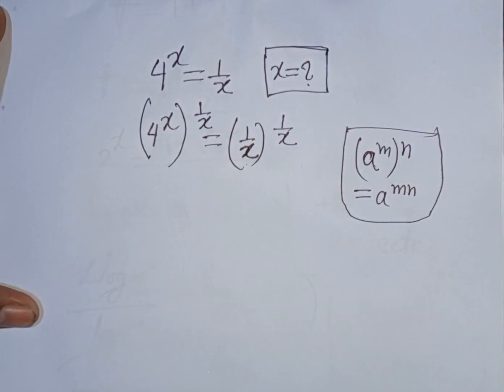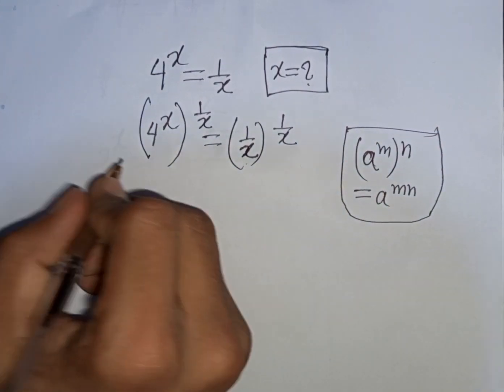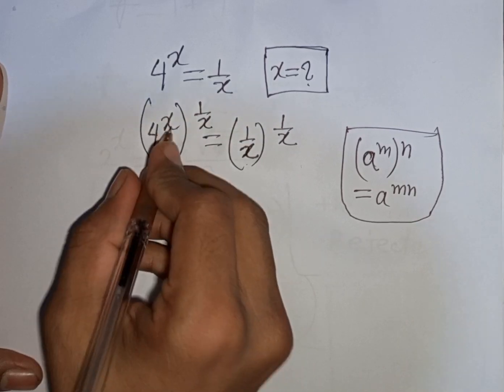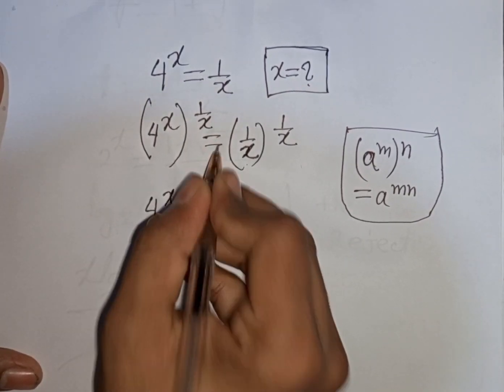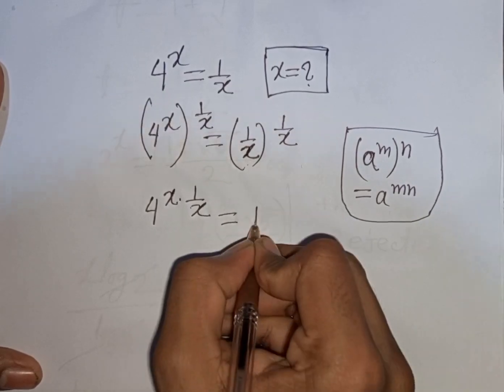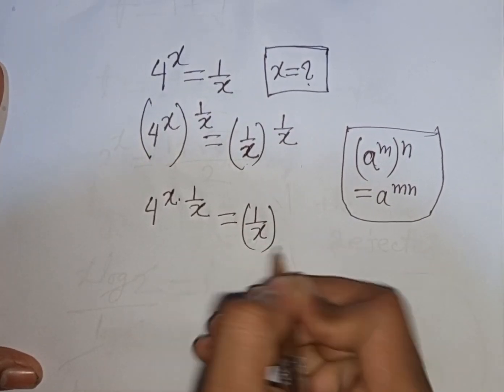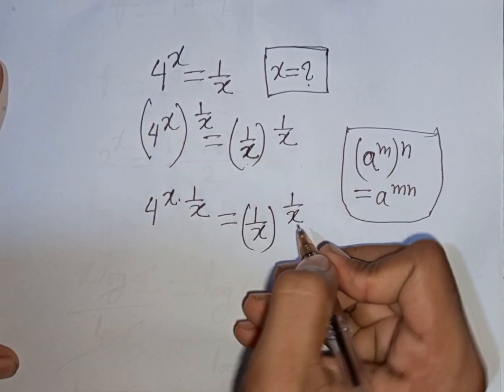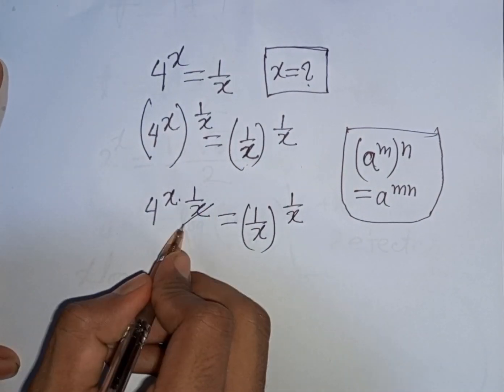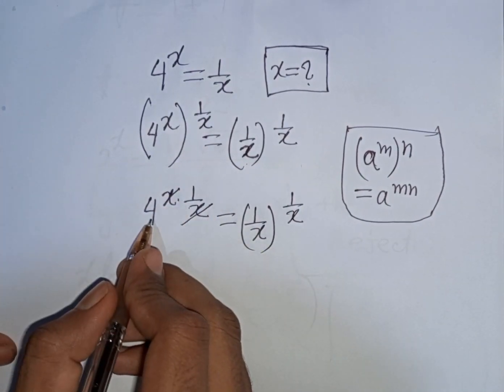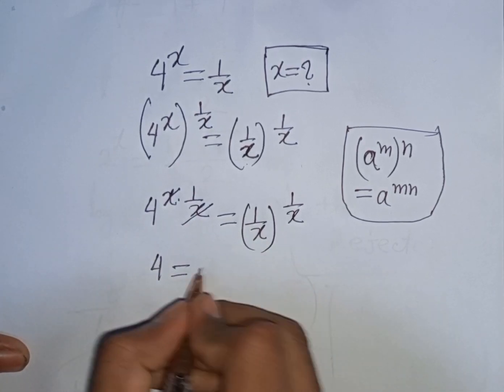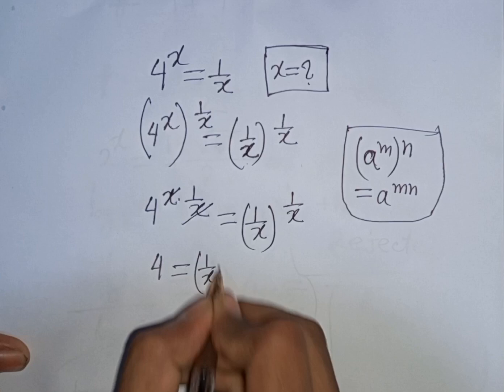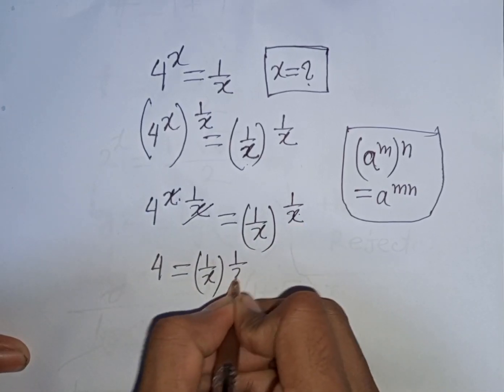So according to this formula, I can write here 4^(x × 1/x) = (1/x)^(1/x). Now we see this x, this x will be cancelled, so we have 4^1, that means it will be 4 = (1/x)^(1/x).